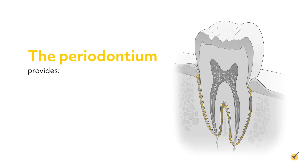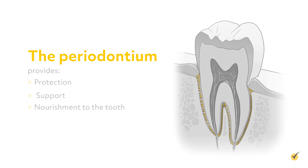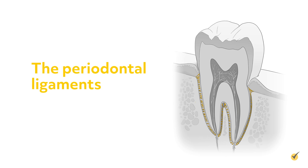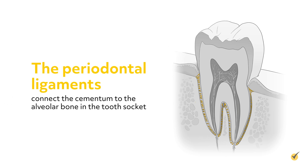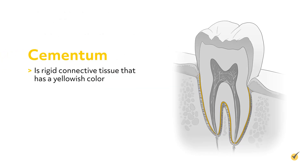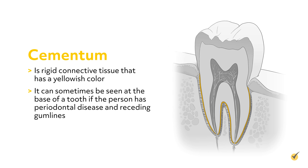The periodontium provides protection, support, and nourishment to the tooth. The periodontium comprises the gum, the cementum, the alveolar bone or process, and periodontal ligaments. The periodontal ligaments connect the cementum to the alveolar bone in the tooth socket. Cementum is rigid connective tissue that has a yellowish color, and it can sometimes be seen at the base of a tooth if the person has periodontal disease and receding gum lines.